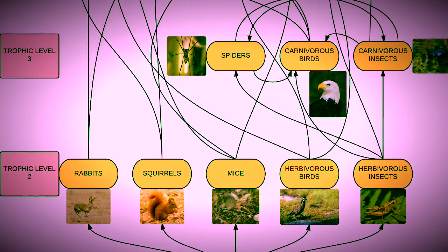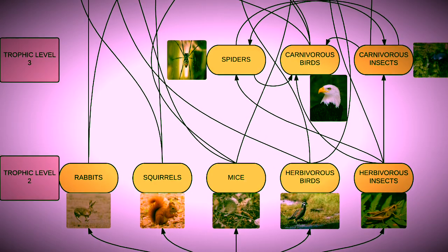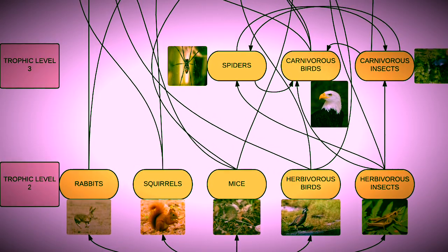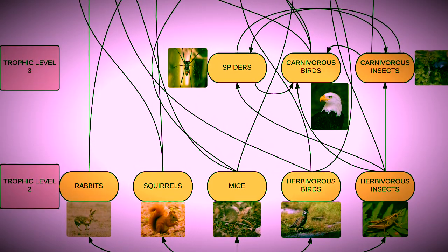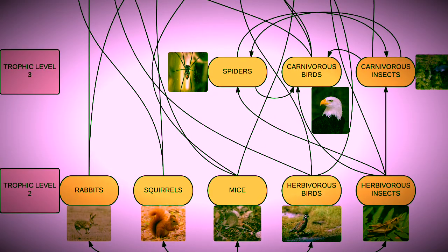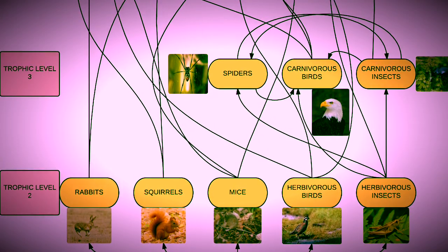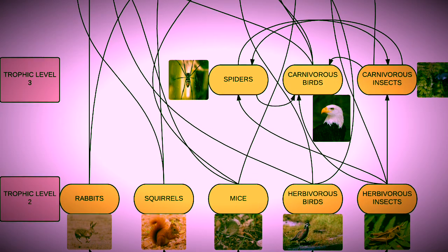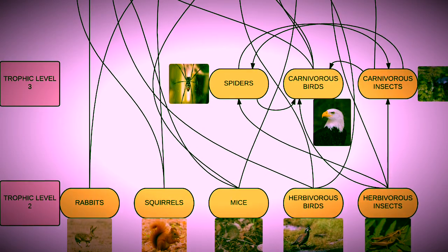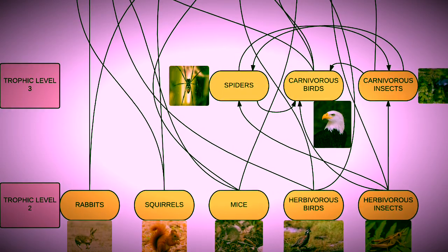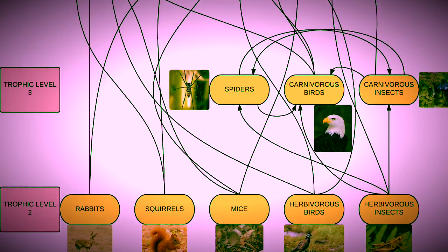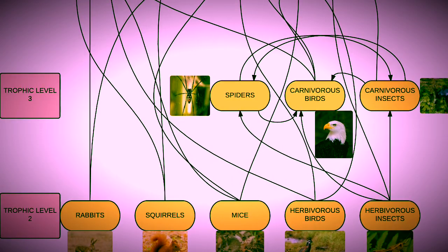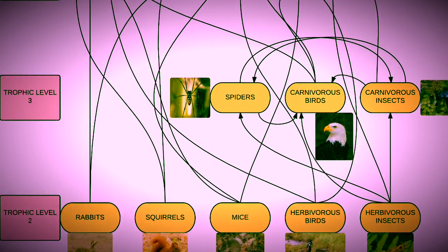Say the whole squirrel population from trophic level 2 dies off. This would cause the animals from trophic level 3 and 4 to lose one of their food sources. They would have to devour the other trophic level 2 species, causing them to die off too because they didn't have enough time to reproduce. Animals from trophic level 3 and 4 would run out of food, and who knows what would happen next.